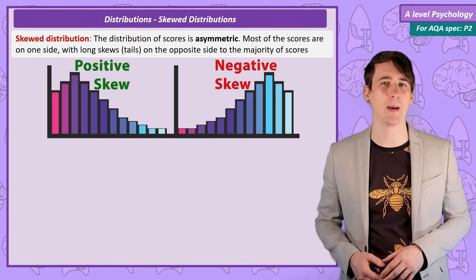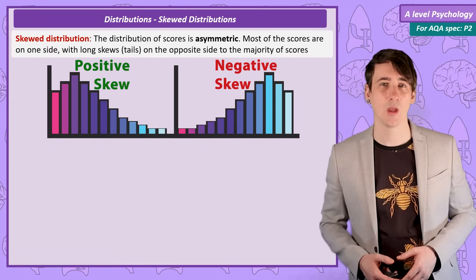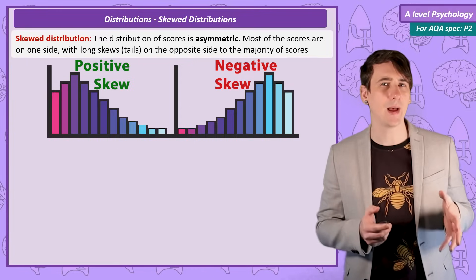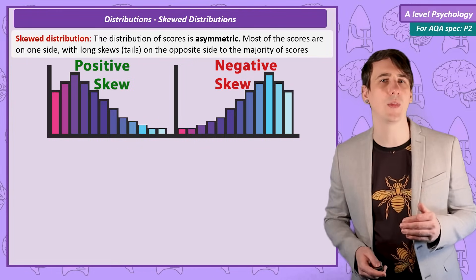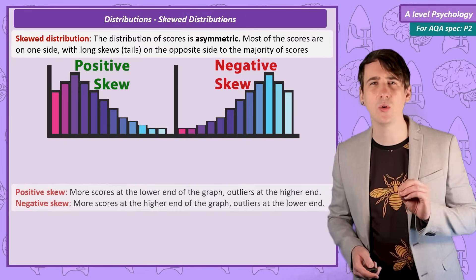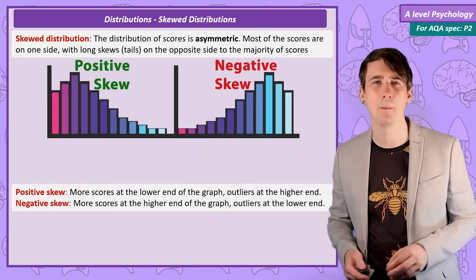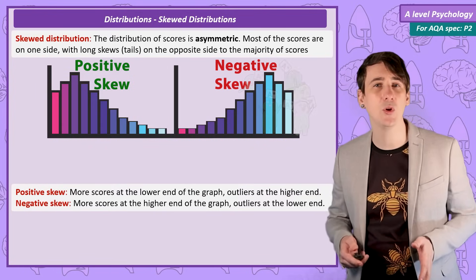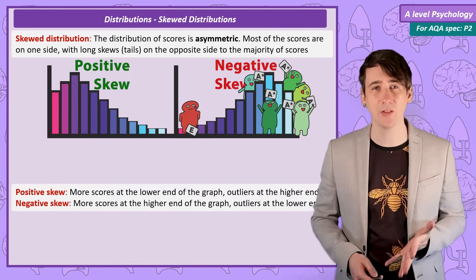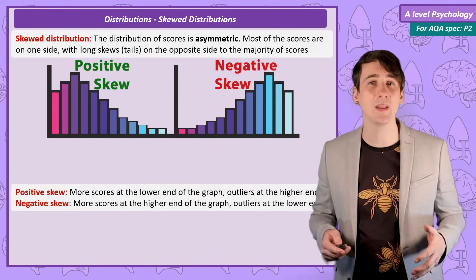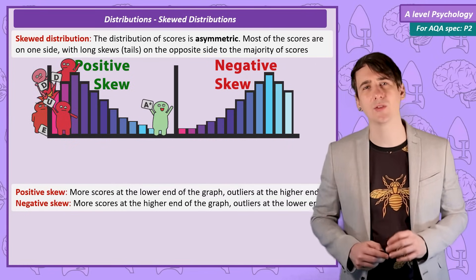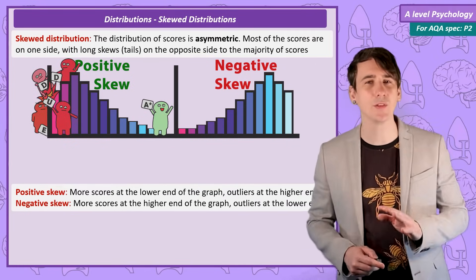So how could these skews happen? Imagine a well-constructed test — you would hope that if a large number of people took it, a few would do really well and a few badly, but most would score around the middle, as a standard distribution. But if we made all the questions super easy, most people would get high scores with fewer low scores — this would be a negatively skewed distribution. And if we made the test really hard, most scores would be really low with only a few high scores — this would be a positively skewed distribution.